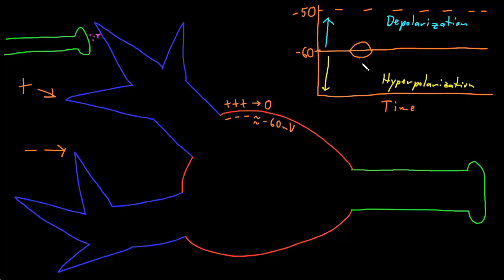Two important properties of graded potentials are that they decay with both time and distance, so their effect is brief and local. Graded potentials decay with time — the membrane potential changes for a brief time and then returns to the resting potential unless there is more input. Because graded potentials decay with time, if two graded potentials happen separated by enough time, they won't have any effect on each other. For example, if one depolarization is finished and fully decayed before a second depolarization occurs, these two had no effect on each other.